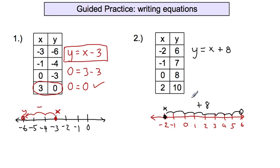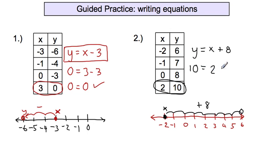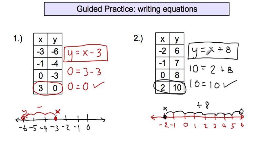Now I'm going to pick some other data here to confirm that, and substitute the values. You can do any one of these pairs. The one on the bottom is fairly easy — rewriting the equation with these two values: the y is now 10, and the x is now 2. So I have 10 on one side. Does 2 plus 8 equal 10? Yes — I have checked it. That is a correct equation.